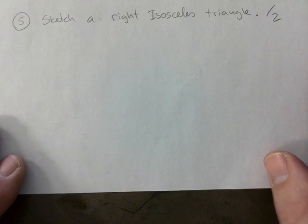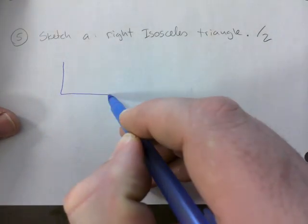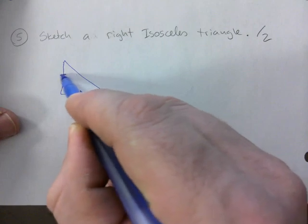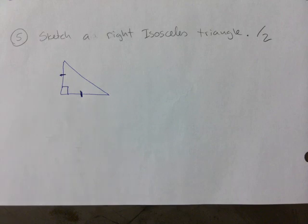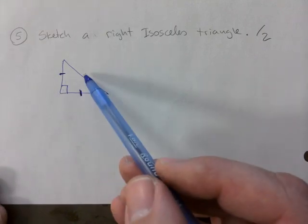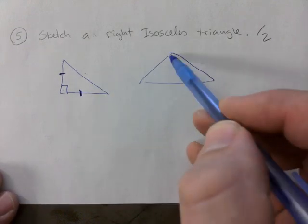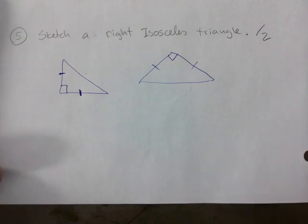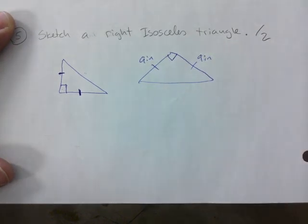Let's go to sketch the right isosceles triangle. You could have done it like this: give me the 90° and tell me the other two sides are the same. You cannot say the side across the 90° is the same as another side — there's only one longest side. The other two are equal. That's two marks: the 90° and the markings, or you could label them 'nine inches, nine inches' — that's fine.